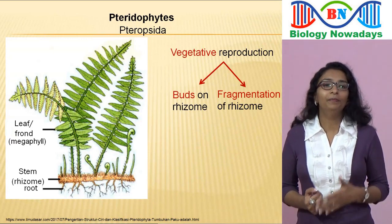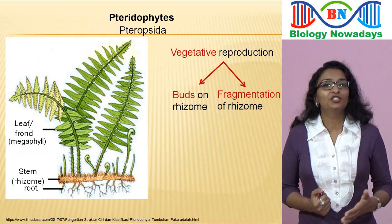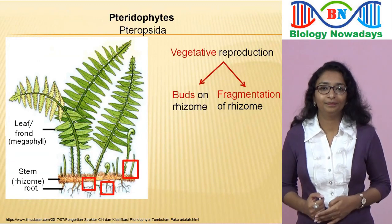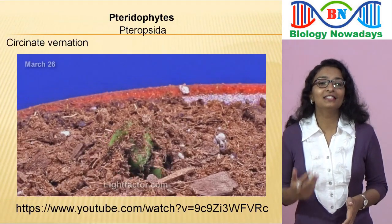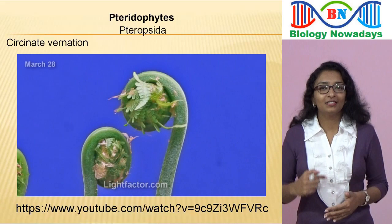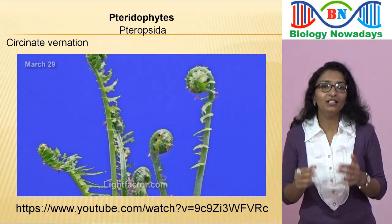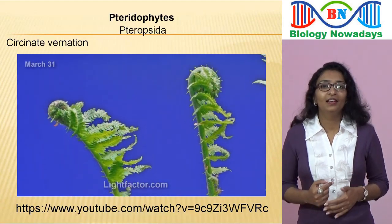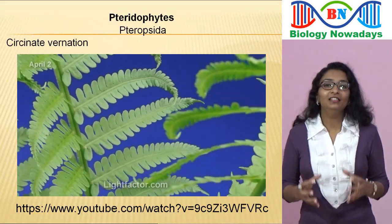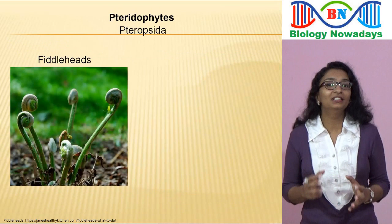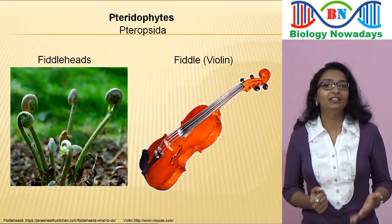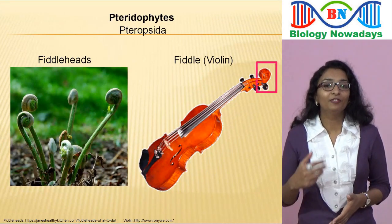Another characteristic feature of ferns is that in most species, the young leaves are coiled in the bud. This type of leaf development is known as circinate vernation. When the fern leaf is formed, it is tightly curled so that the tender growing tip is protected within the coil. As the leaf grows, it unrolls from the tip. These coiled young leaves are commonly referred to as fiddleheads, because they resemble the handle of a fiddle or violin.